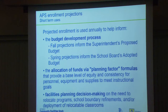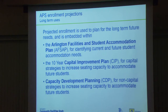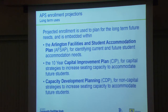Short-term enrollment projections help with facility planning decisions: things like boundary refinements — do we need a minor boundary tweak to balance enrollment between two schools, should we relocate programs, or should we use relocatable classrooms? Long-term uses feed into our AFSAP — the Arlington Facility Student Accommodation Plan — which helps identify current and future seat needs. Then there's the 10-year CIP, or Capital Improvement Plan, which provides capital strategies for building more seats, and also capacity development planning — non-capital strategies to use existing space more efficiently.